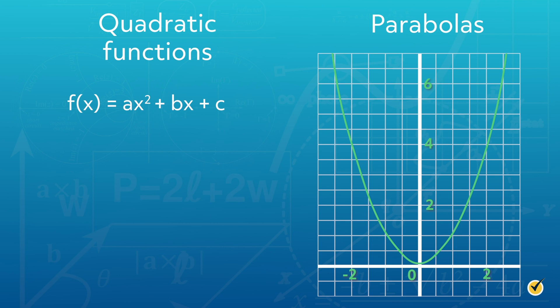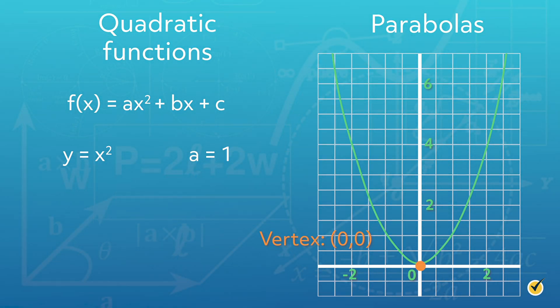The parent function of a quadratic function is y equals x squared, which has a leading coefficient of a equals 1. The coefficient of the linear term and constant are both 0. The vertex of the parent quadratic function is at the ordered pair 0, 0. Changing values of a, b, and c result in transformations of this parent function. Transformations include changes to shape, the direction of the parabola opening, and the location of the vertex.